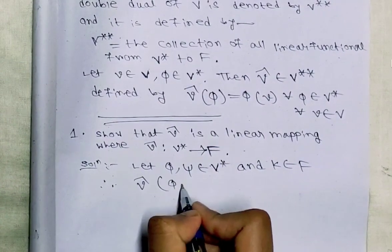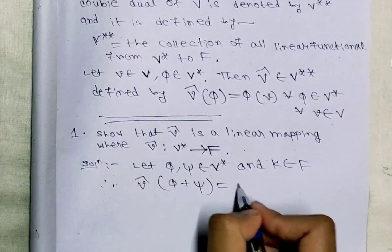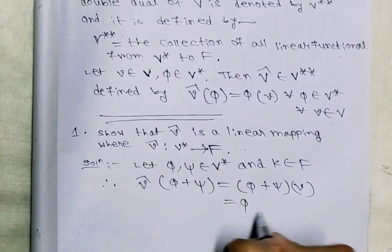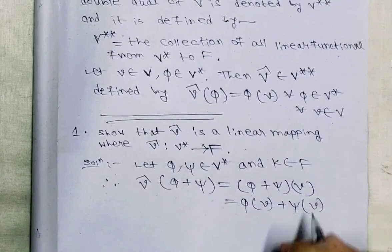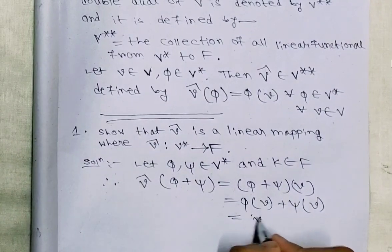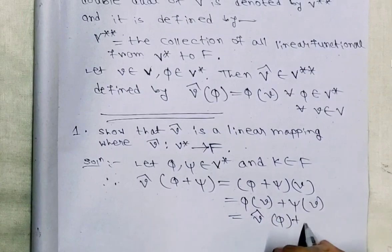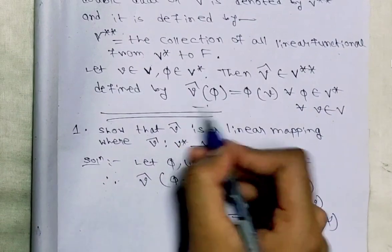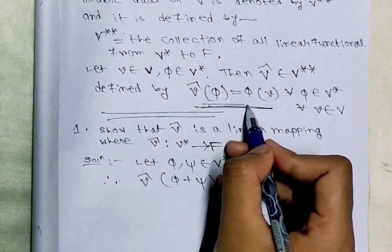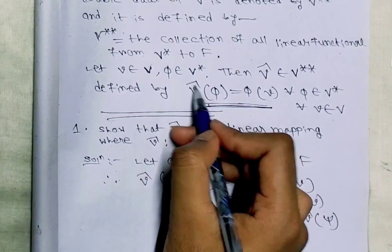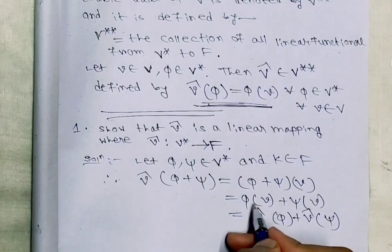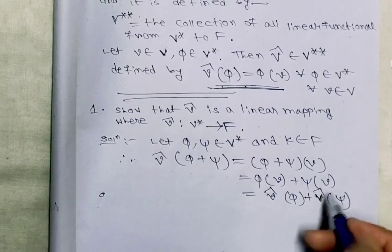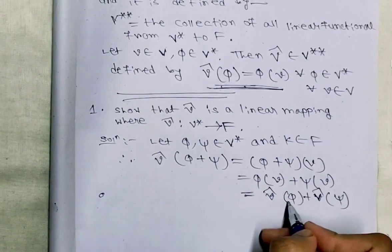We have v̂(φ + ψ)(v) equals φ(v) plus ψ(v). Now, since the double dual is defined by v̂(φ) = φ(v), we have φ(v) = v̂(φ) and similarly ψ(v) = v̂(ψ). Therefore v̂(φ + ψ) = v̂(φ) + v̂(ψ).